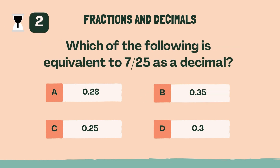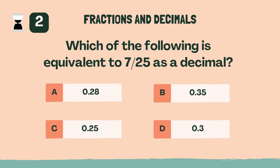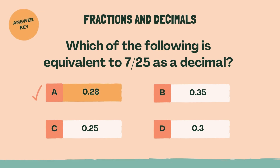Which of the following is equivalent to 7 twenty-fifths as a decimal? A, 0.28.